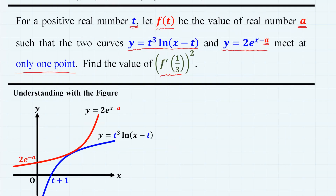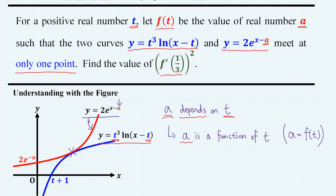Let's summarize the problem once more, because it can be a bit confusing. When t changes, the first curve y equals t cubed ln x minus t also changes. Consequently, the second curve also changes in order to meet the first curve at only one point, meaning that the value of a also changes. So a is a function of t, which the problem denotes as f(t), and we want to find f prime of one-third, squared.